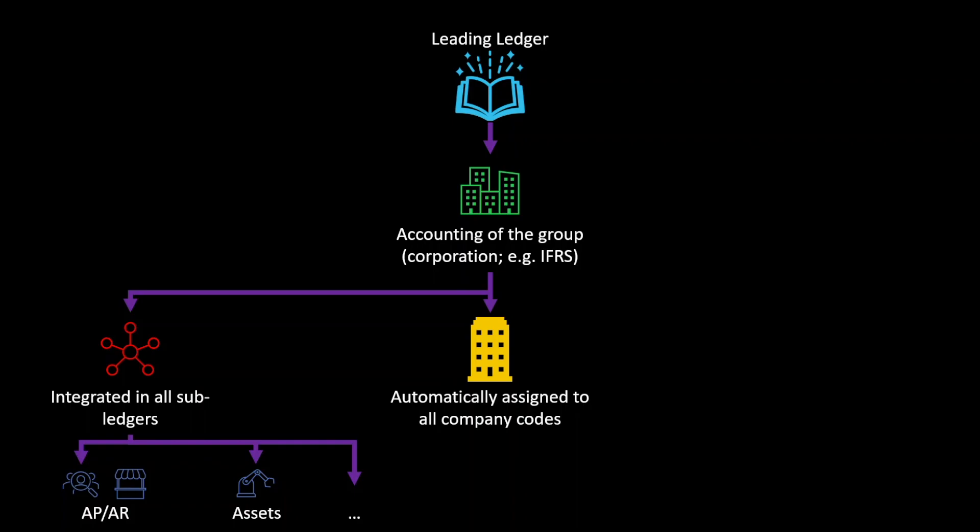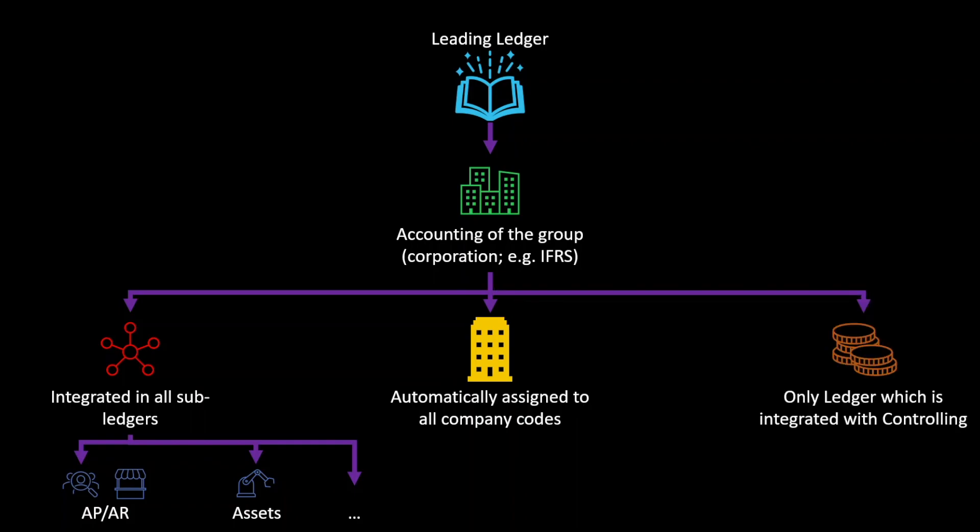The leading ledger is automatically assigned to all of our company codes in our client and cannot be deactivated. There can also be only one leading ledger per client. And the leading ledger is the only ledger which is integrated with controlling — so managerial accounting — meaning that only financial values from the leading ledger can be posted to controlling.